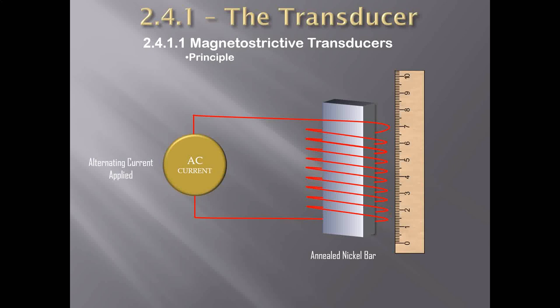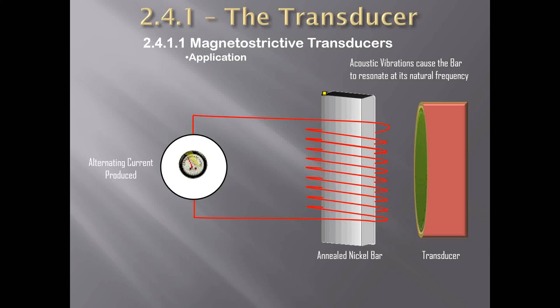As the AC — alternating current — through the coil increases to a maximum in one direction, the annealed nickel bar will reach its maximum contraction length. With the current at zero, the bar returns to normal again. The length then increases in the opposite direction, causing the bar once again to constrict. This phenomenon, which causes the bar to change in length under the influence of a magnetic field, is called magnetostriction. When acoustic vibrations cause the bar to constrict at its natural resonant frequency, an alternating magnetic field is produced around the coil, causing a minute alternating current to flow in the coil and a small EMF to be generated, which is then amplified and processed by the receiver as the returned echo.